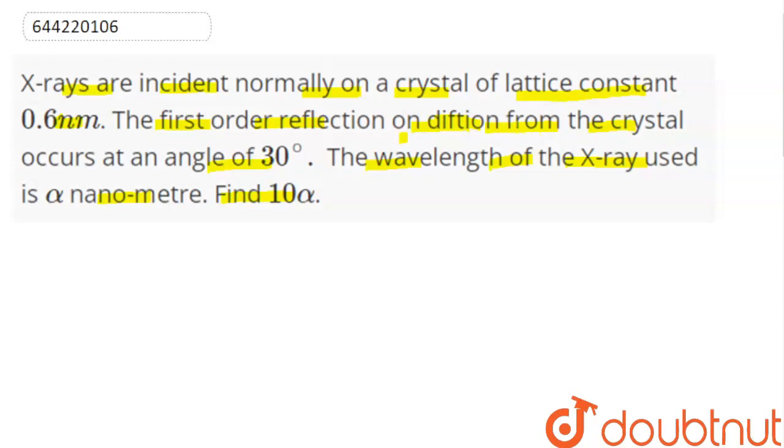Diffraction from the crystal occurs at an angle of 30 degrees. Here we have first order, which is given in the question. Alpha is the wavelength of x-ray used.